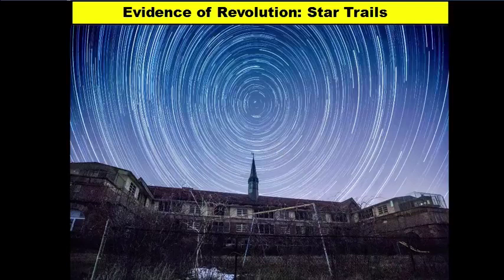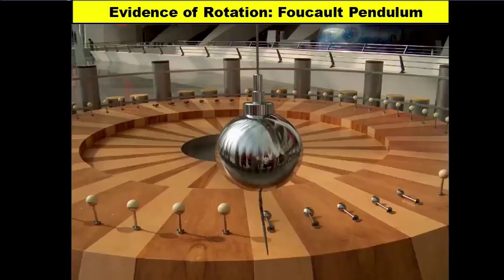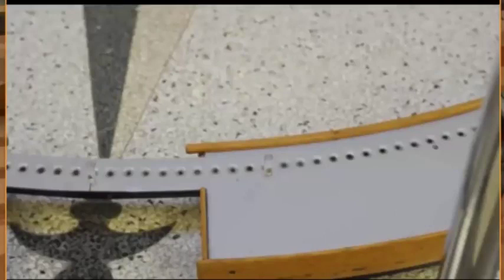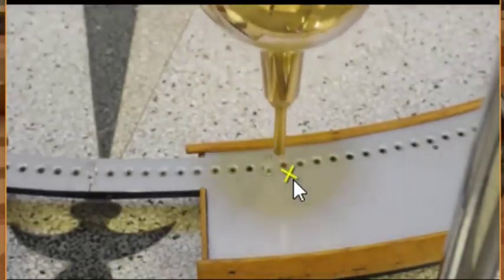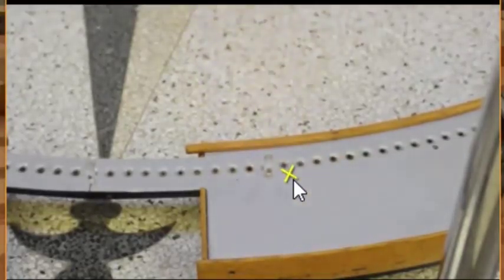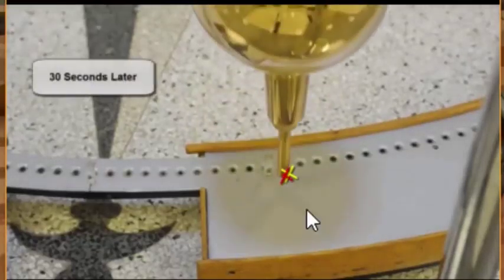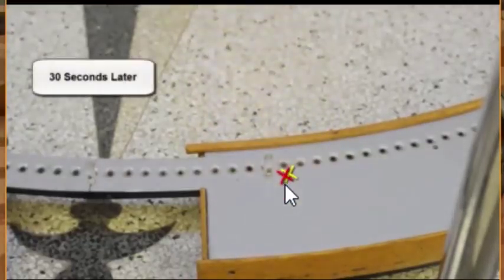The second piece of evidence is what we call Foucault's Pendulum. Foucault's Pendulum was designed and set up in 1851, and it was the first thing that gave us simple evidence that the earth rotates. All this pendulum does is swing back and forth and knock down pegs. In this example, once set in motion, the pendulum swings back and forth and would hit right above this dot.